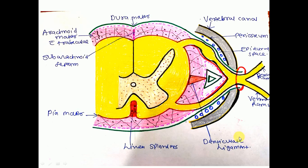Third, the denticulate ligament — the word is related to teeth. The denticulate ligament is the modification or process of pia mater from the lateral part of the spinal cord extending to the dura mater. This lateral extension of the pial process is known as the denticulate ligament.